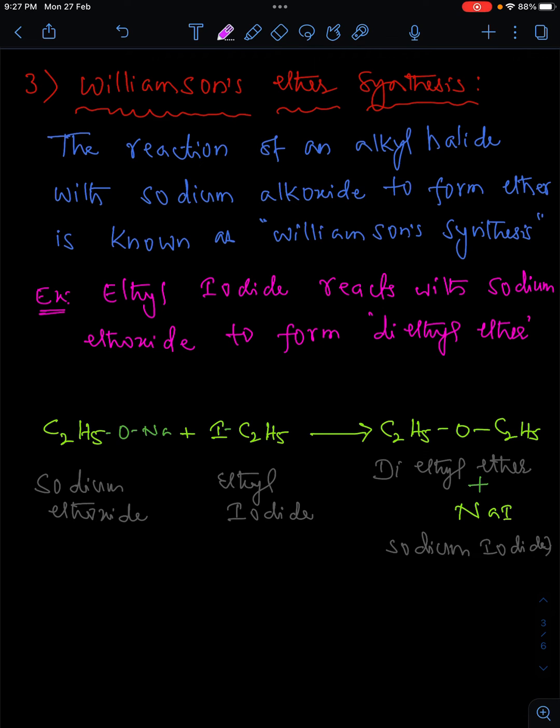The reaction of an alkyl halide with sodium alkoxide to form ether is called Williamson synthesis. For example, if you take ethyl iodide which is reacting with sodium ethoxide to form diethyl ether, this is called Williamson synthesis.